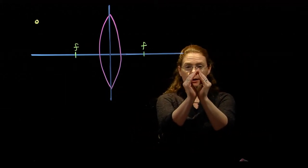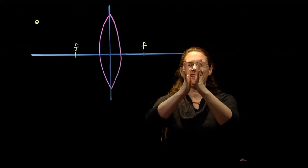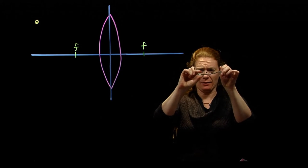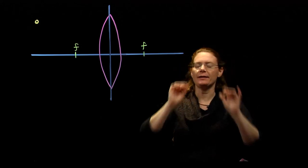A converging lens, which is shaped like this, and then a diverging lens, which is shaped like that. If you can see, my glasses are thinner in the middle and thicker on the outside. Those are diverging lenses.